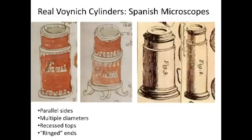In this slide, on the left you see two actual Voynich cylinders. On the right you see one of the Spanish microscopes I showed you before, but also another one from the same catalog of 17th century Spanish microscopes. You'll notice that the actual microscopes have parallel sides, so that the tubes can slide in on one another. That's also the reason for the multiple diameters, the little rings, so that they can be focused. The actual Voynich cylinders very often have parallel sides and multiple diameters like that.